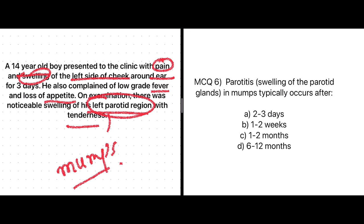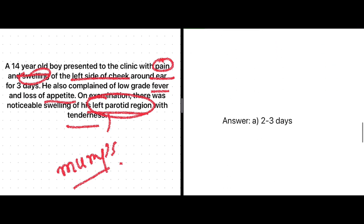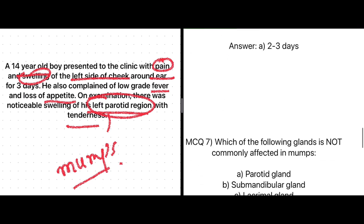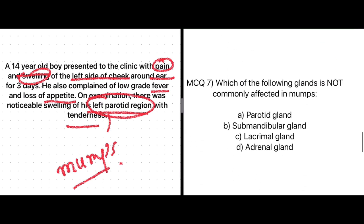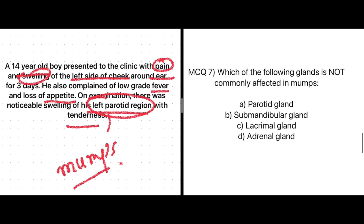Mumps parotitis typically occurs after: 2 to 3 days, 1 to 2 weeks, 1 to 2 months, or 6 to 12 months? It typically occurs after 2 to 3 days. Which of the following glands is not commonly affected in mumps: parotid gland, submandibular gland, lacrimal gland, or adrenal gland?